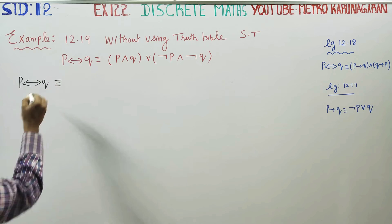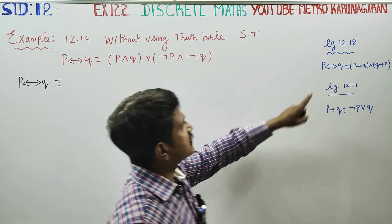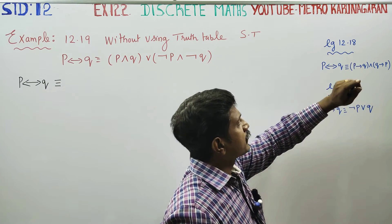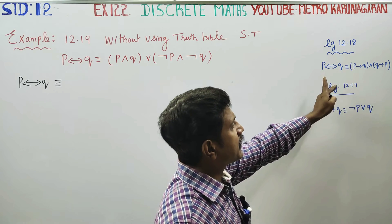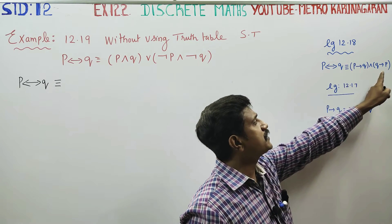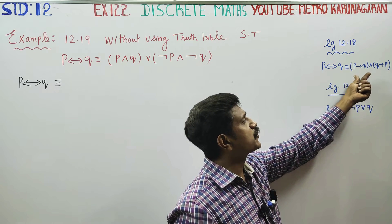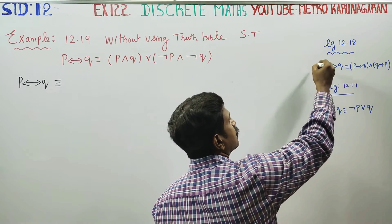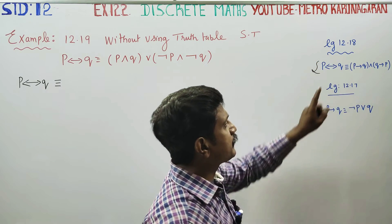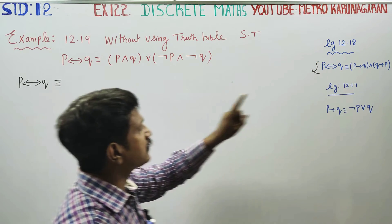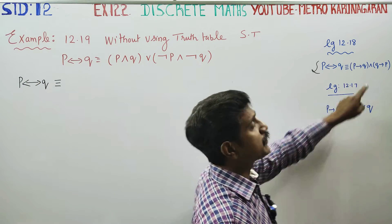First, to start, you have to refer to example 12.18. In example 12.18, the biconditional and conditional equivalence relationship proof is already done. Use that result here.